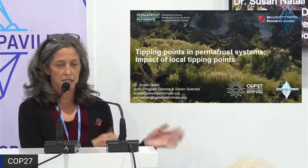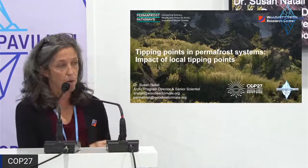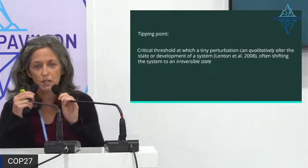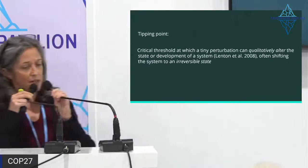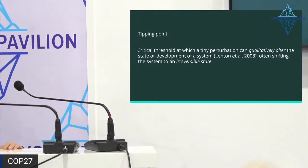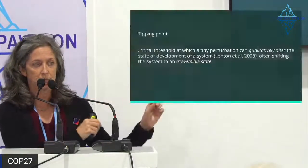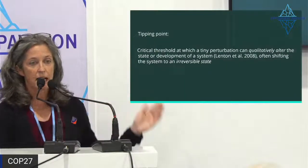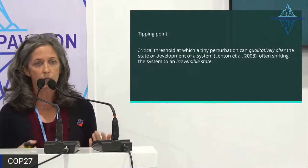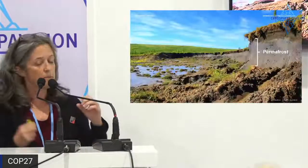I'm not going to be talking about tipping points in the climate system — that's what the two previous presentations covered. I'm talking more generally about local tipping points. I have a different definition: a tipping point is a critical threshold at which a tiny perturbation can qualitatively alter the state or development of a system, often shifting the system to an irreversible state. When talking about a climate tipping point in the climate system it's quite different than a tipping point at the local scale.